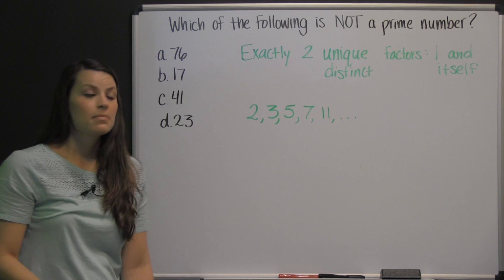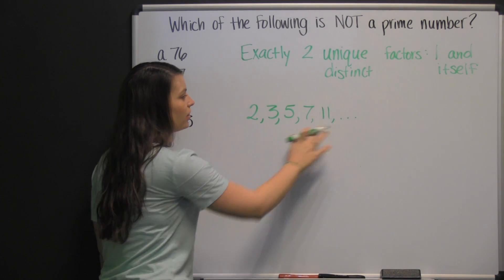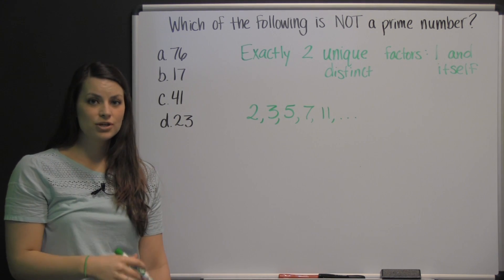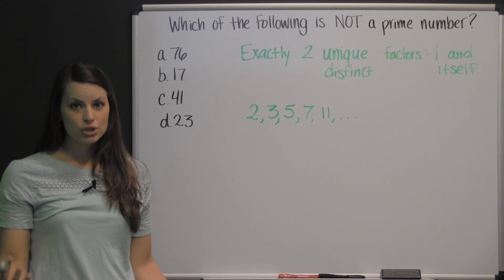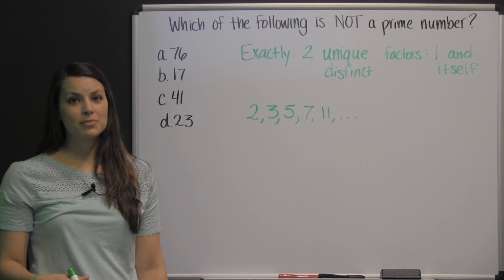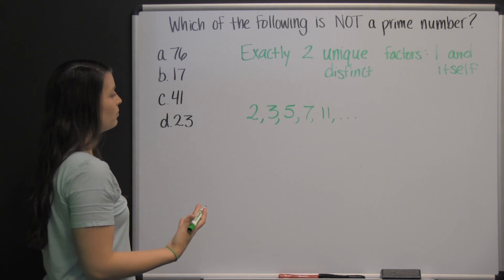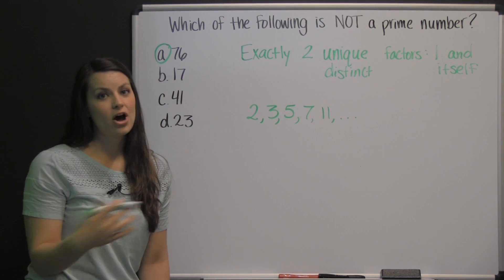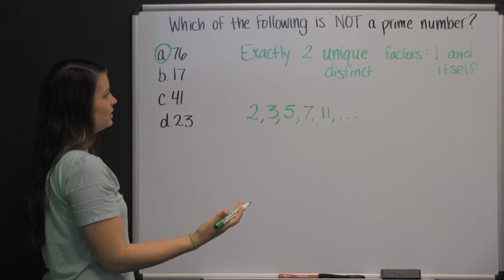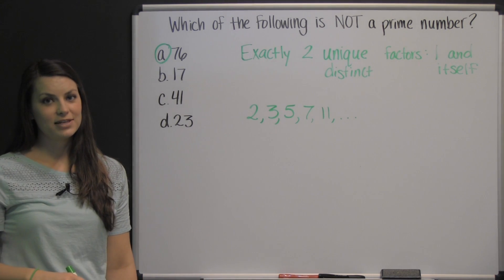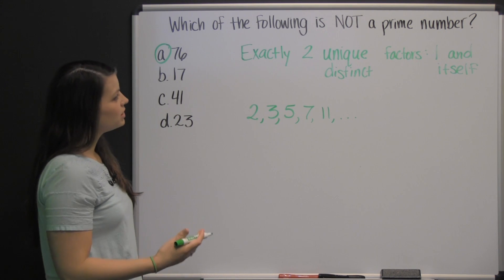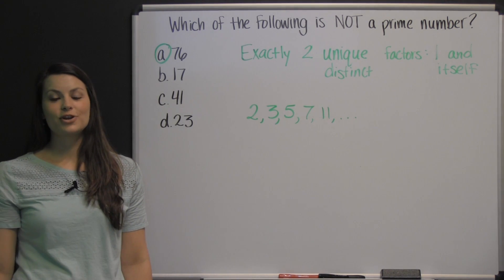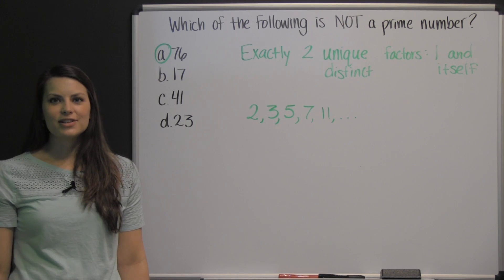So you may have noticed that after the number two, we skipped every other even number. And that's because every even number past two has more than two factors, since two is a factor of every even number. So really that makes this problem pretty simple. Since seventy-six is an even number and it's not two, that means it's not prime. Because besides one times seventy-six, there's also two times thirty-eight, which would give you seventy-six. So it's important to know that with prime numbers, the only even prime number is two. Because that may help you answer your question really quickly. Good luck on the HSPT test.